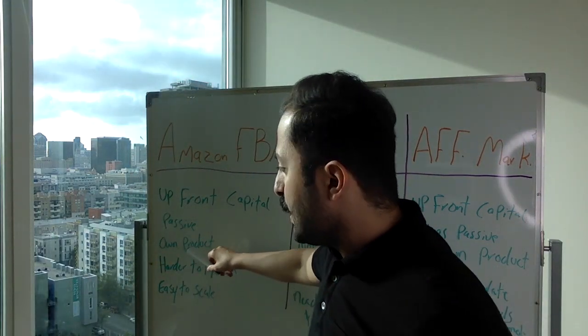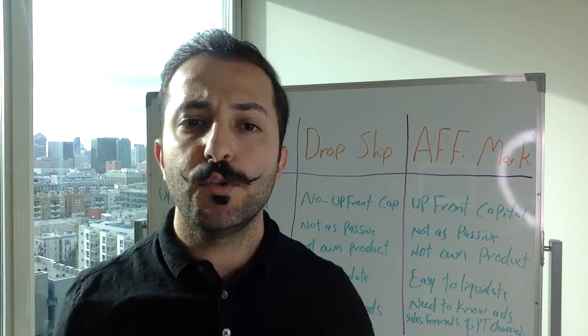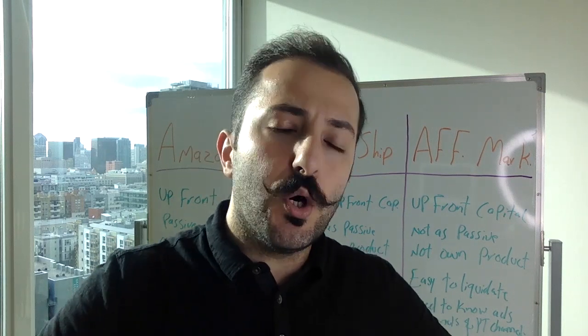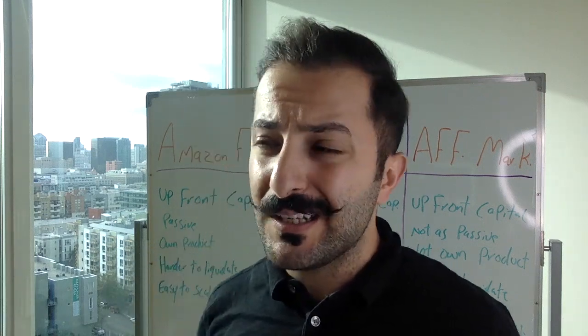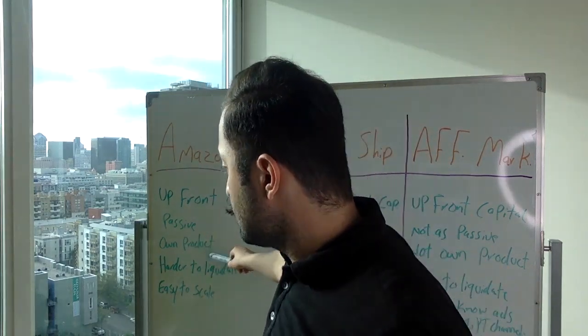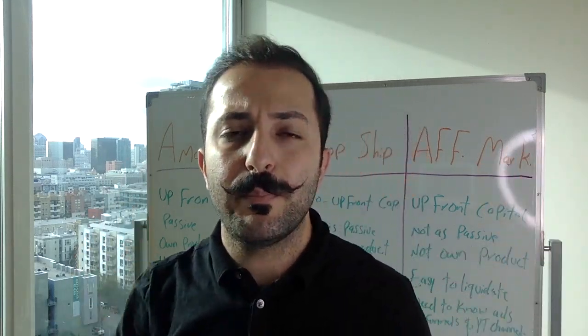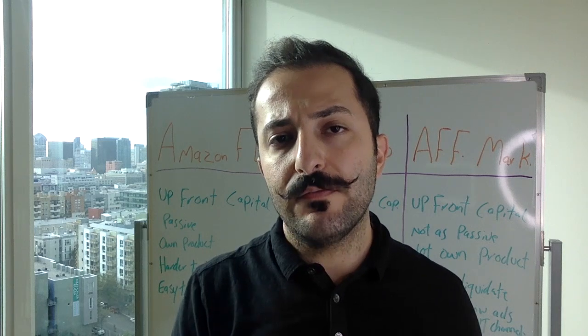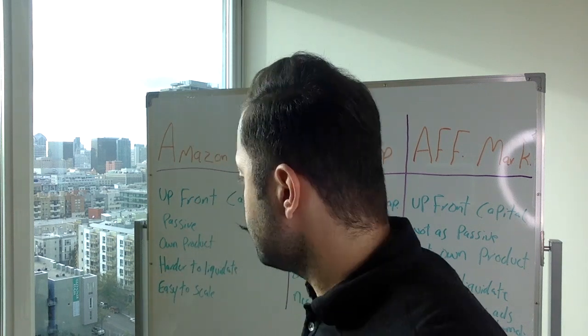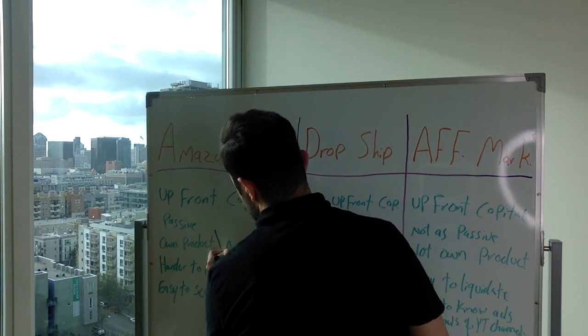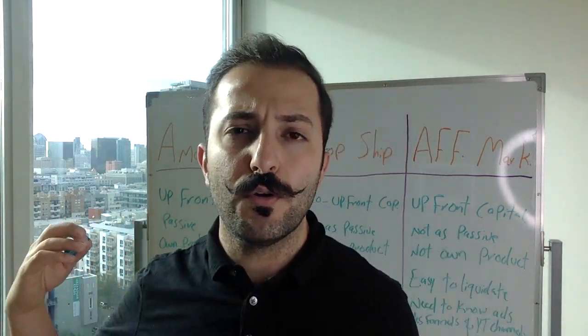The third point is: do I sell my own product? A lot of people go into private label because they want their own thing — they feel that attachment, like 'I came up with it, I designed it.' Some people don't want the obligation. With Amazon FBA, if you're doing private label, you do have your own product. If you're doing arbitrage or wholesale, it's technically not your own product.